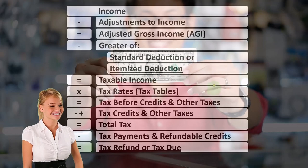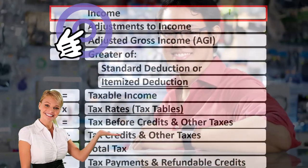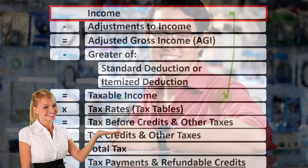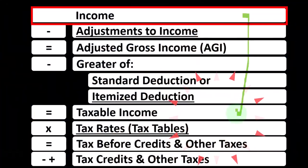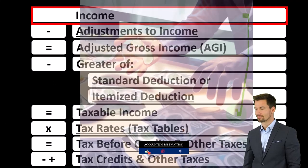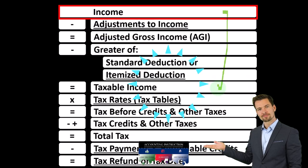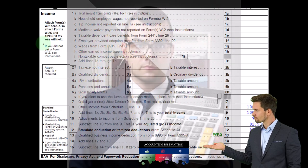Income Tax Formula — we're focused on line one income. In the first half of the income tax formula is in essence an income statement, although just an outline, with other forms and schedules flowing into these line items. One of those being the Schedule C, which has business income minus business expenses, with the net business income flowing into line one income of the income tax formula.